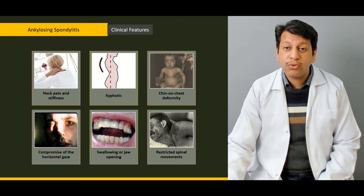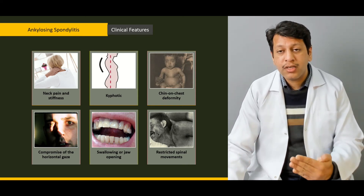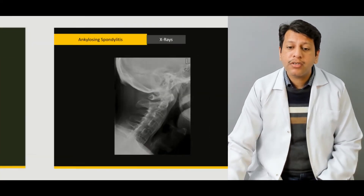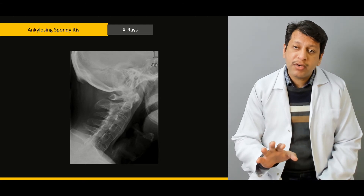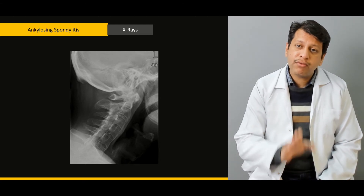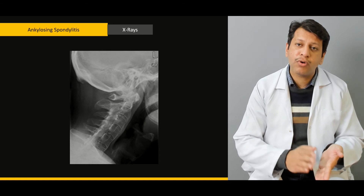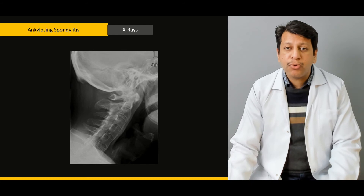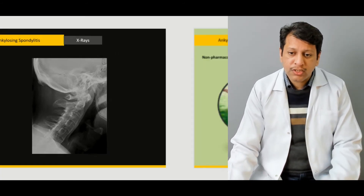Once diagnosed, we need to assess how much the disease has progressed and how we can halt its progression. We will discuss how to differentiate X-rays of ankylosing spondylitis from DISH — diffuse idiopathic skeletal hyperostosis — because this distinction is important as it changes the treatment regimen.